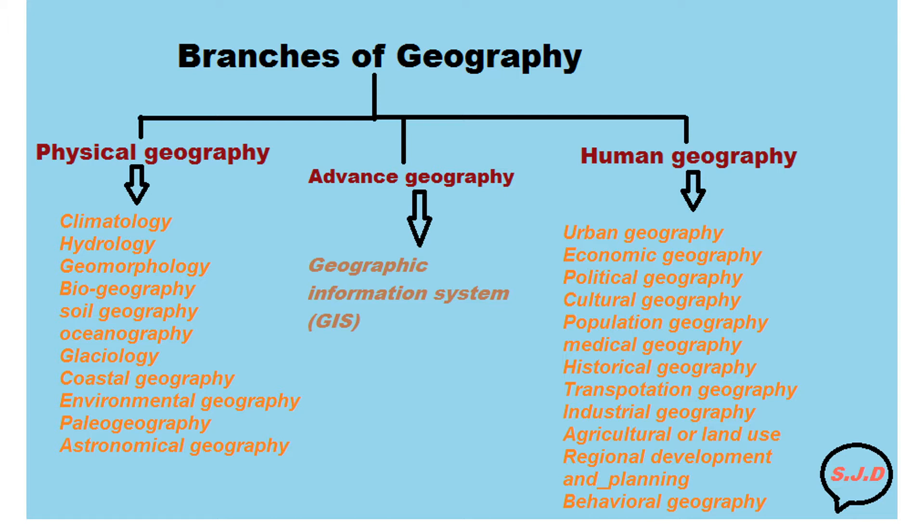Advanced geography incorporates geographic information systems, or GIS, which we'll discuss more as we go through this lecture. And then, of course, you have human geography, which deals with urban geography, economic geography, political geography, cultural geography, population geography, medical geography, historical geography, transportation geography, industrial geography, agricultural or land use, regional development and planning, and behavioral geography.